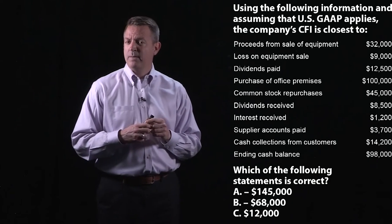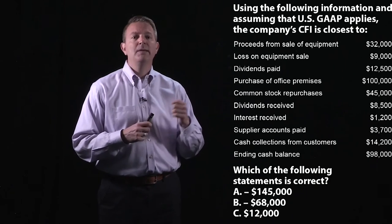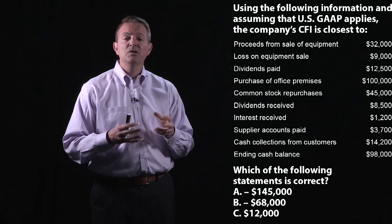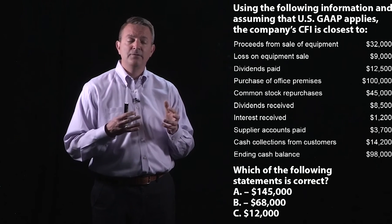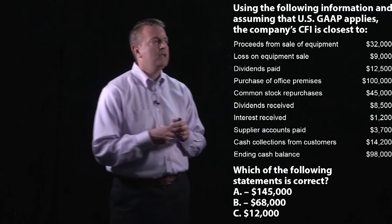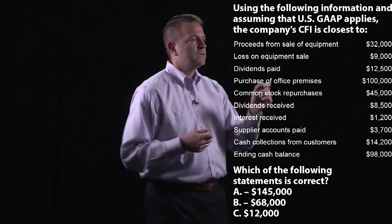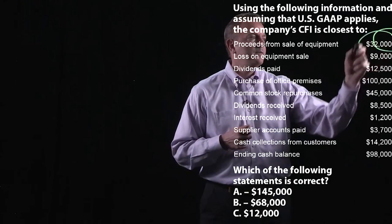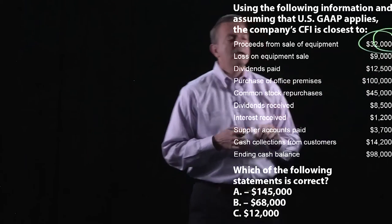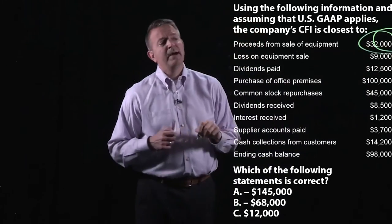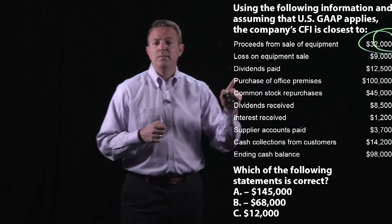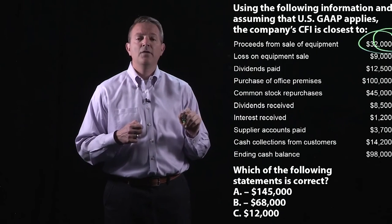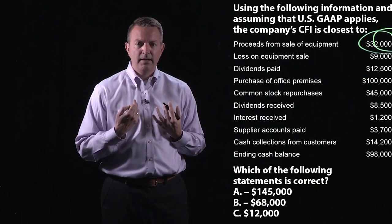Proceeds from the sale of equipment — we can buy equipment and we can sell equipment, and that's going to show us the cash flows from investing. So that $32,000 right here is going to be part of CFI. Those are proceeds, which means that's cash coming in.